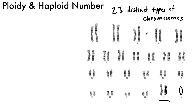Luckily for us, that means we've already found the haploid number. The haploid number for humans is 23. We have 23 distinct types of chromosomes, so our haploid number is 23.